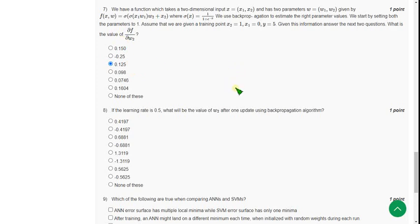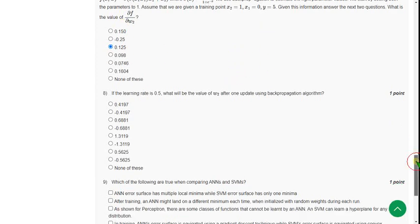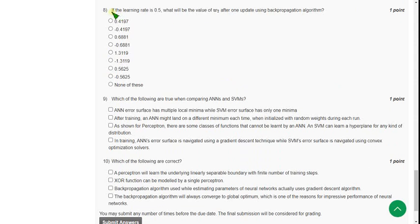Next, moving on to the eighth question. If the learning rate is 0.5, what will be the value of w2 after one update using backpropagation algorithm? For eighth question, I have got the solution as 0.5625, that is last but third option.